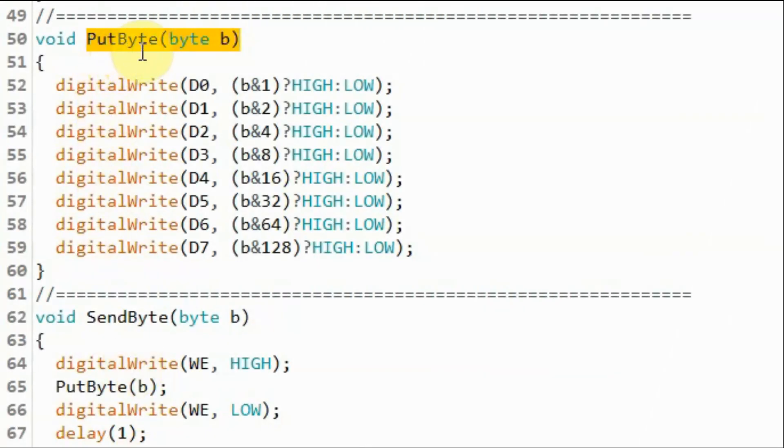Function put byte will receive the byte to be sent and store it in variable B. And then using digitalWrite will send the byte bit by bit, starting from the least significant bit up to the most significant bit.